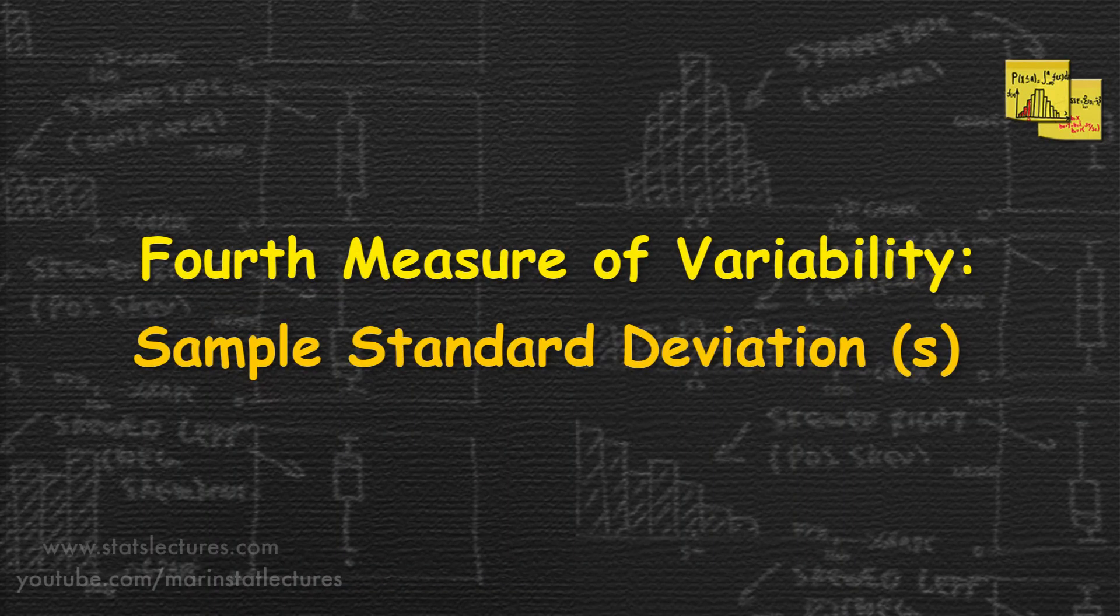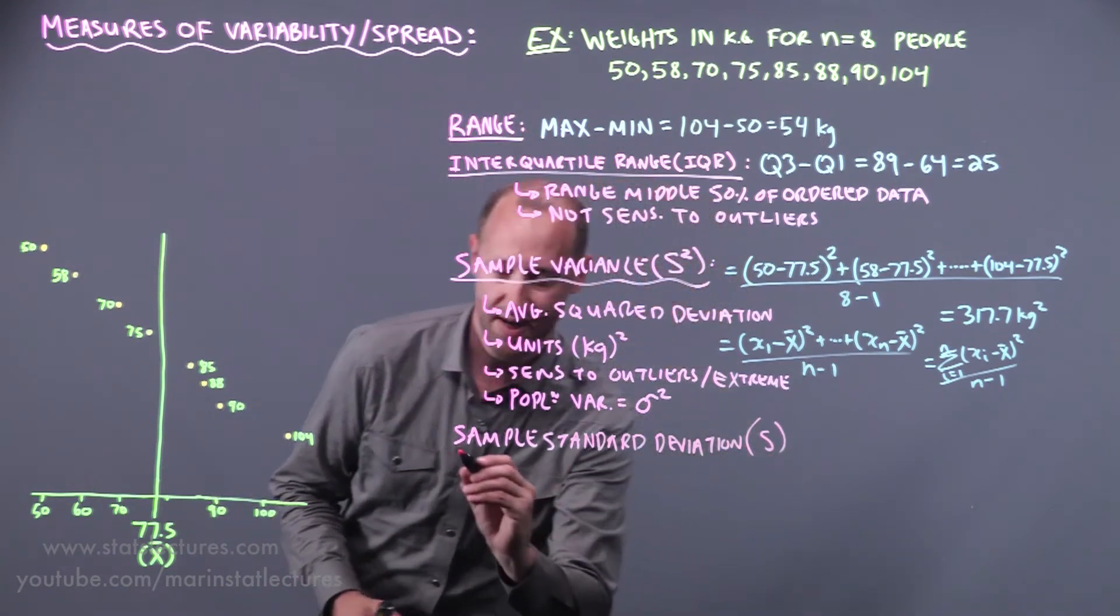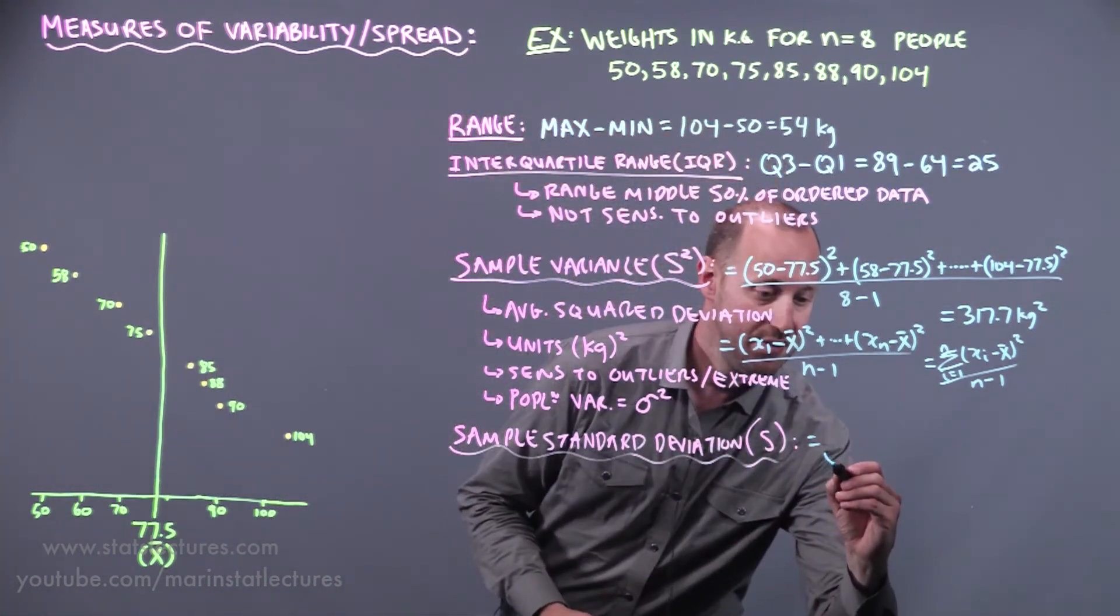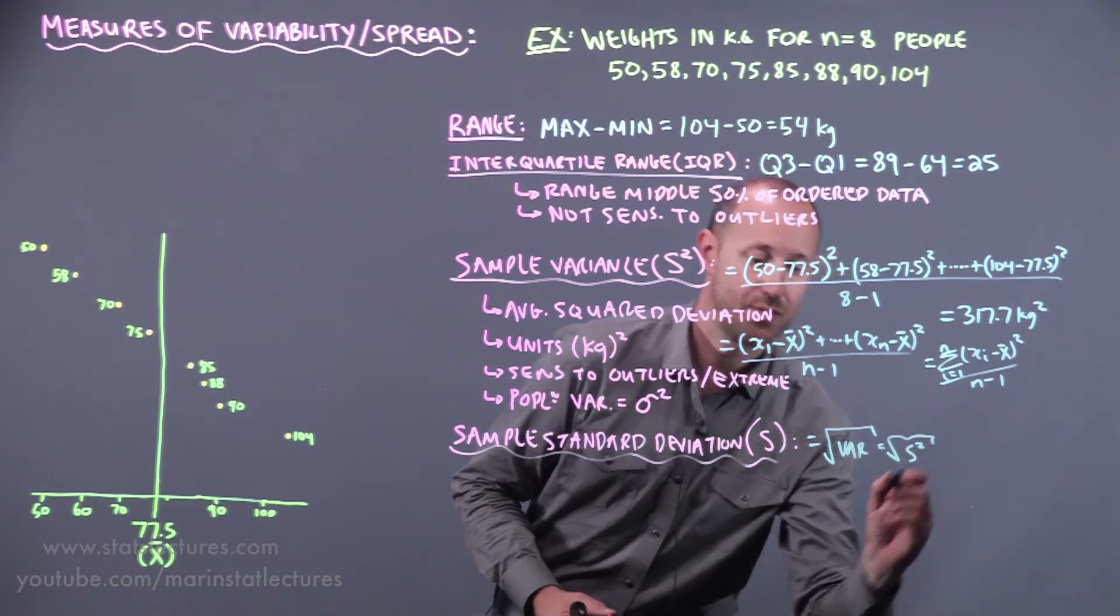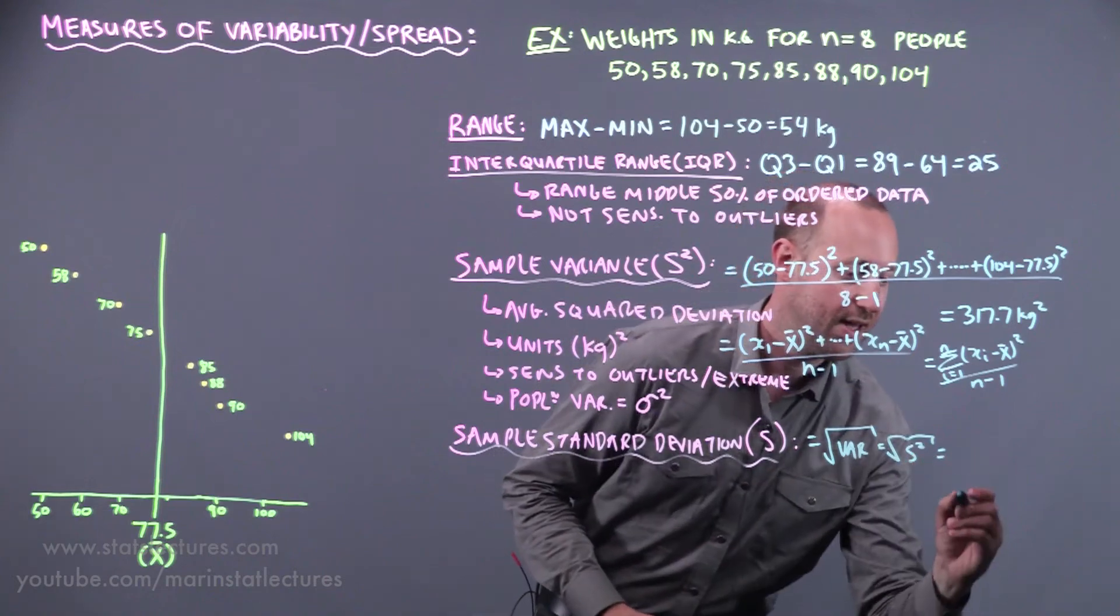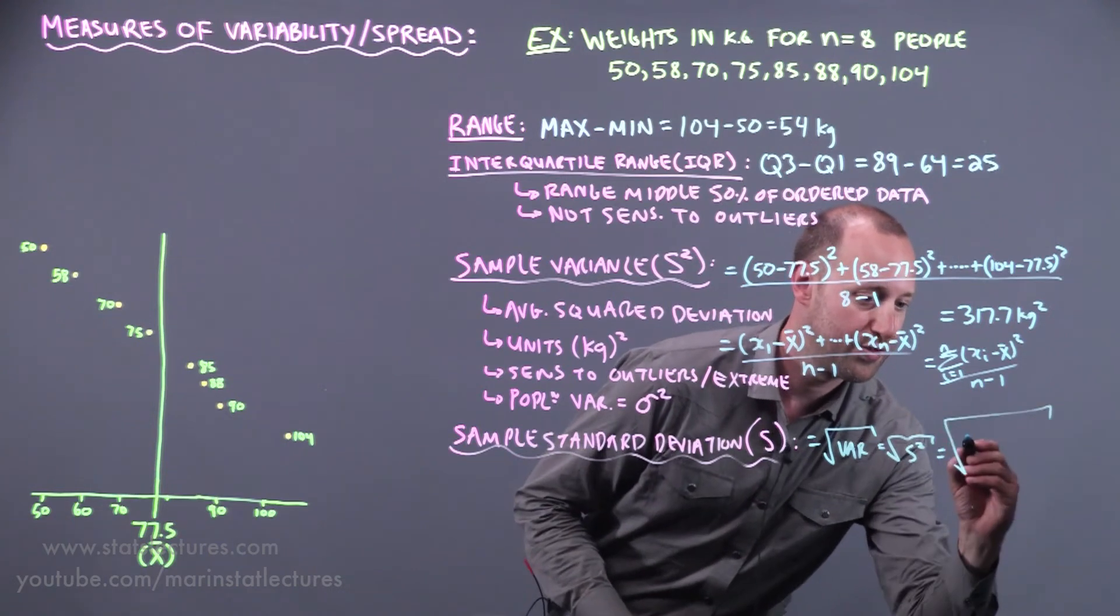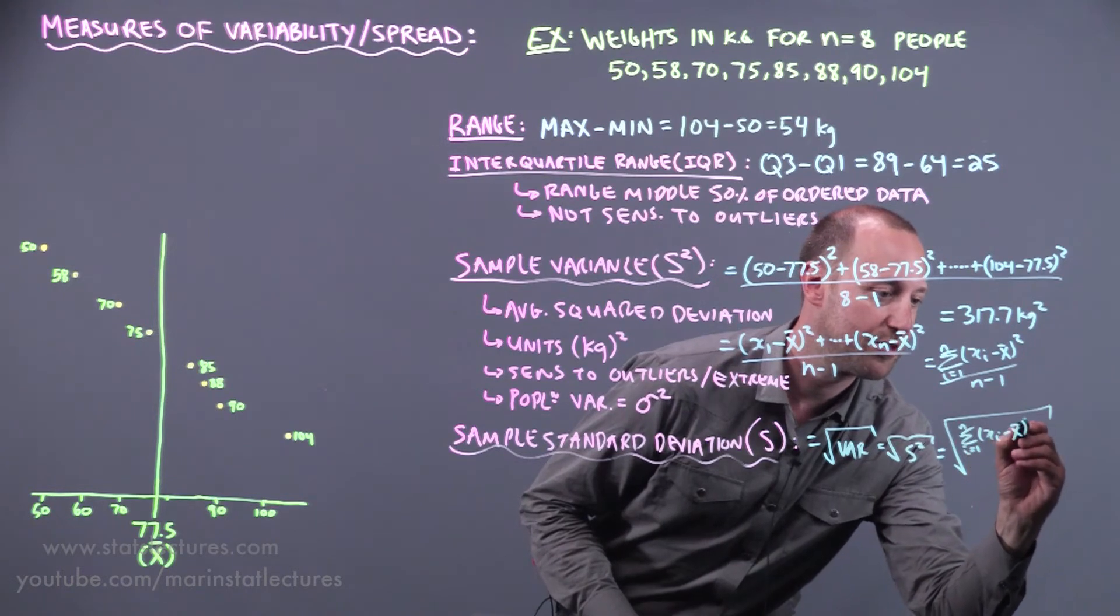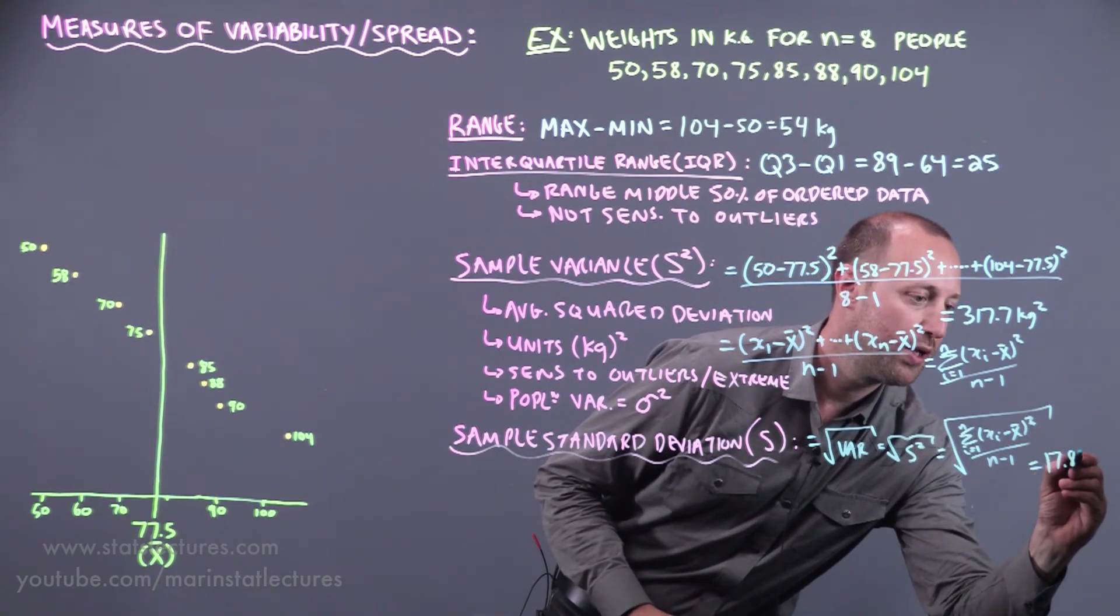Now let's get into talking about the sample standard deviation. Often abbreviated SD, we write with a lowercase s. In terms of formulas, it's the square root of the variance. The square root of s squared. In notation it's the square root of the sum of i going from one up to n, xi minus x bar squared divided by n minus one. If you work that out it's going to come out to be 17.8 kilograms.